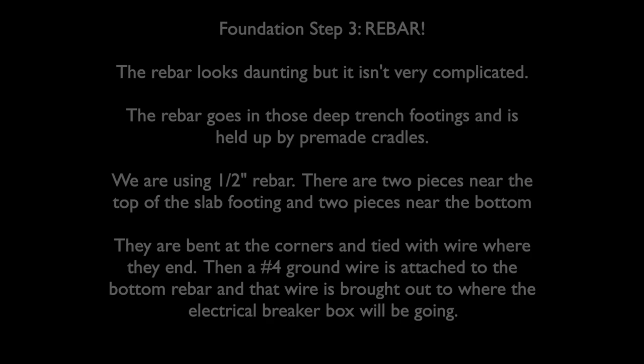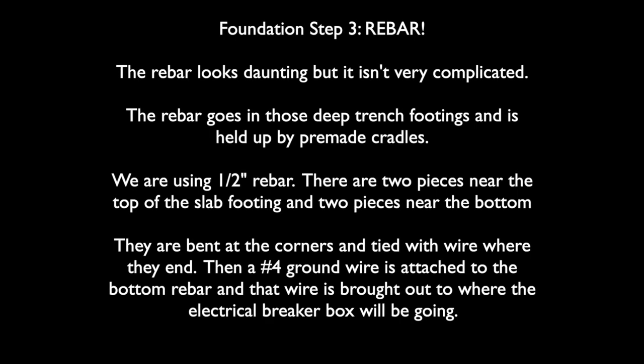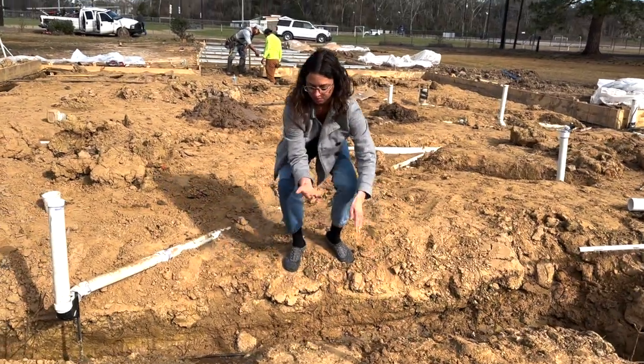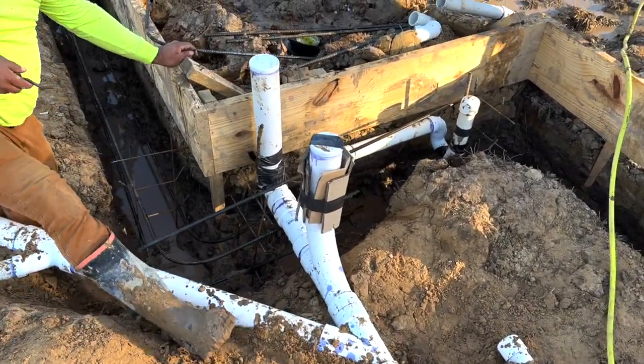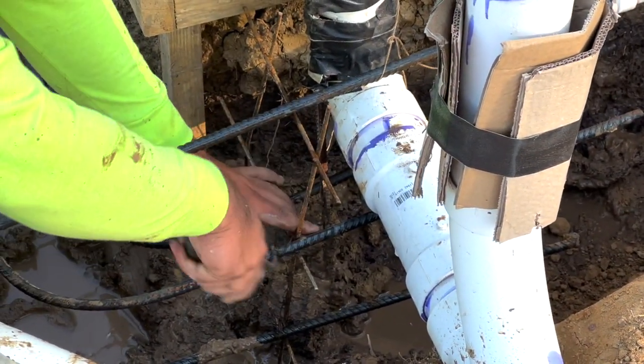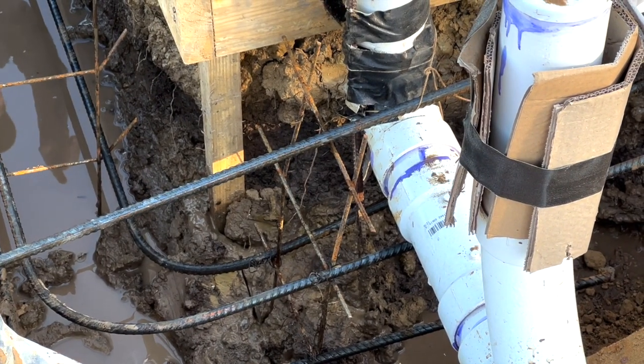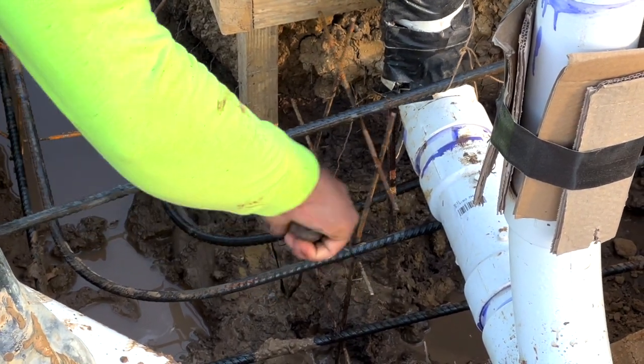The third step is the rebar. Concrete is very strong under compression but not under tension, so you need rebar. The specs come from the inspector — we're using half-inch rebar, two pieces at the top and two at the bottom in the footings. They sit on cradles to hold them in place and get tied to them, because when concrete is blasted into the trenches it will move around — everything has to be very secure. A number four ground wire is also run to ground the slab; this is required by code.